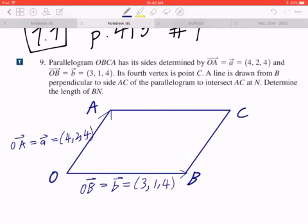The fourth vertex is point C. A line is drawn from B perpendicular to side AC. So if you go back to the diagram, I'm extending this line in such a way that it's 90 degrees with respect to AC and this point is going to be N. Determine the length of BN. So the question becomes what is the magnitude of BN, not BC.